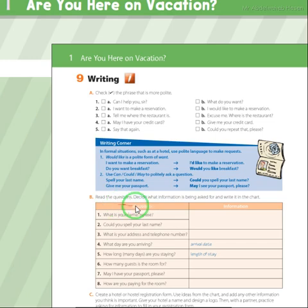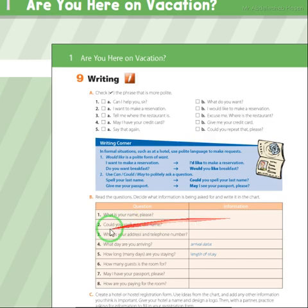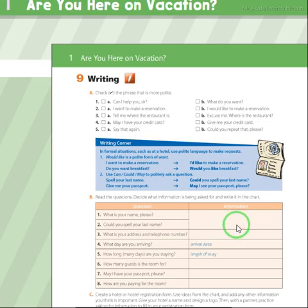Read the questions, decide what information is being asked, and write it in the chart. Question: 'What is your name?' — Write your name, such as Muhammad, Ibrahim, Fahd, Al-Inazi, etc. 'Could you spell your last name?' — This asks you to spell your last name, for example Al-Otaibi: A-L-O-T-A-I-B-I.